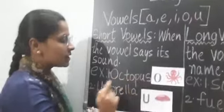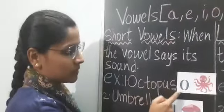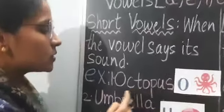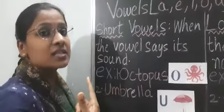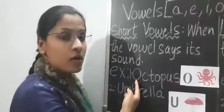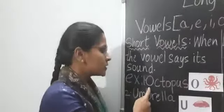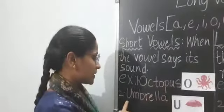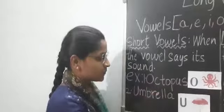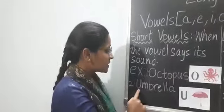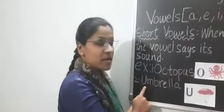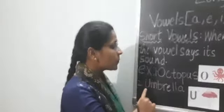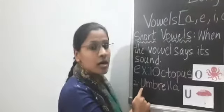For example, we have a first example as octopus. O for octopus. So octopus means you are getting a starting sound as O, so it is the sound of a vowel. O, octopus. Next, let's see for vowel U. U for umbrella. When you are saying umbrella, it is having a vowel U and making a sound. So it is the sound of a letter. This is also a short vowel.